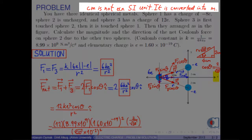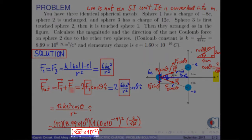Here, since cm is not an SI unit, we convert it into meters. So, we obtain square root of 20 times 10 to negative 2 meters.